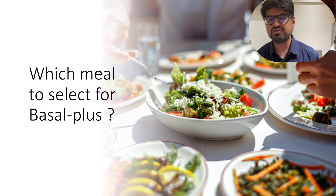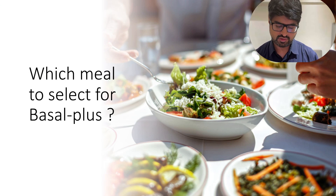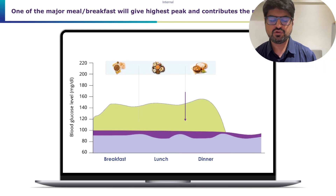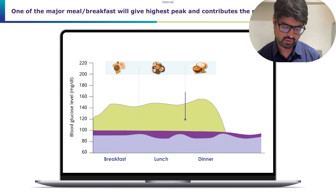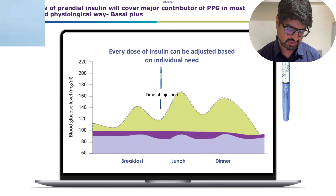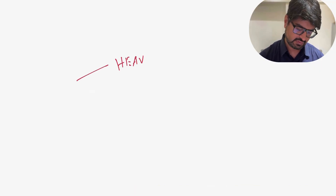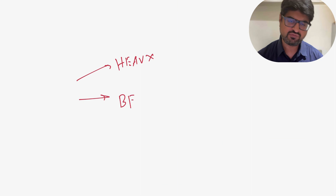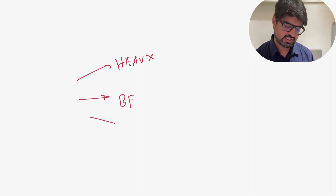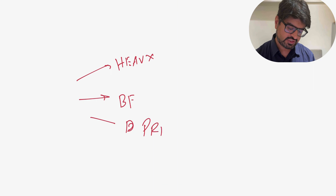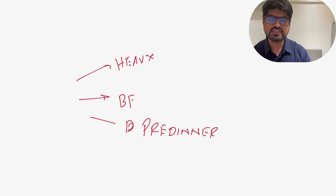Next question: which meal should you target with basal plus insulin? There are three approaches. First, select the heaviest meal of the day. Second, select breakfast to leverage the domino effect. Third, select pre-dinner — and we'll discuss when each approach is appropriate.